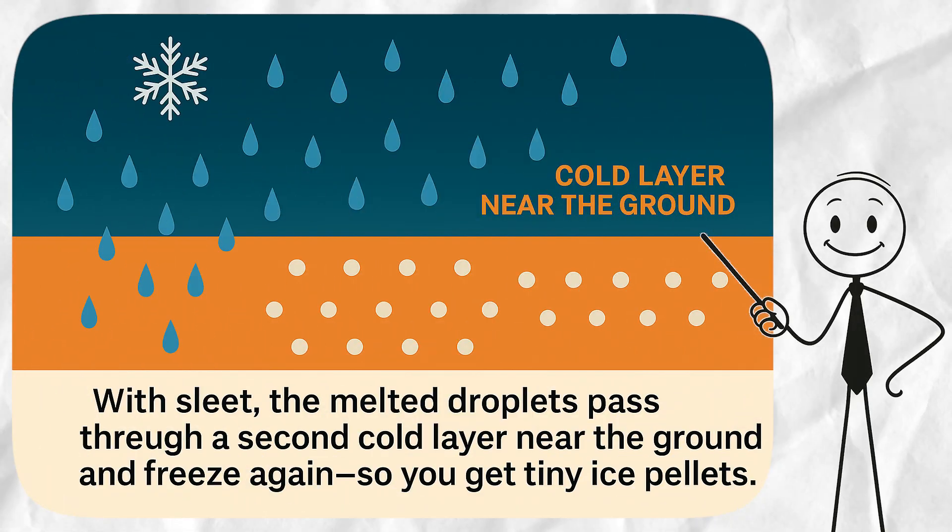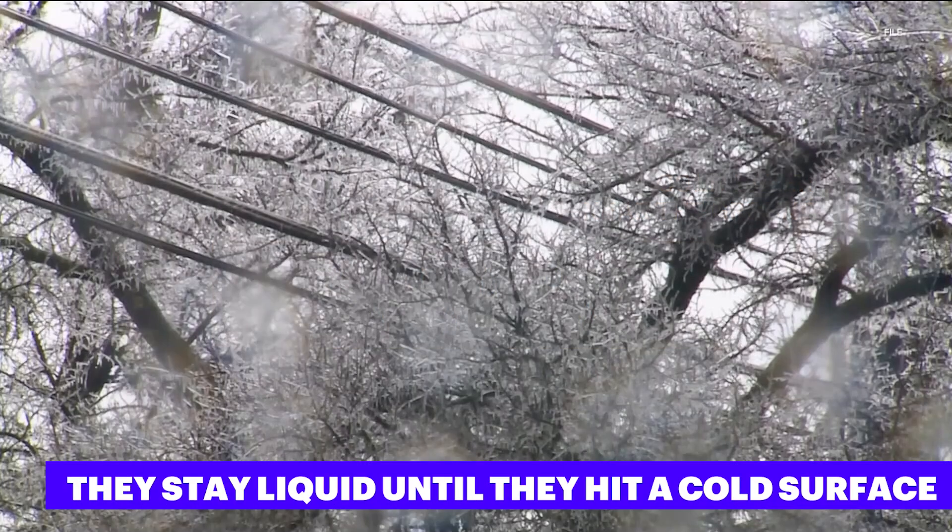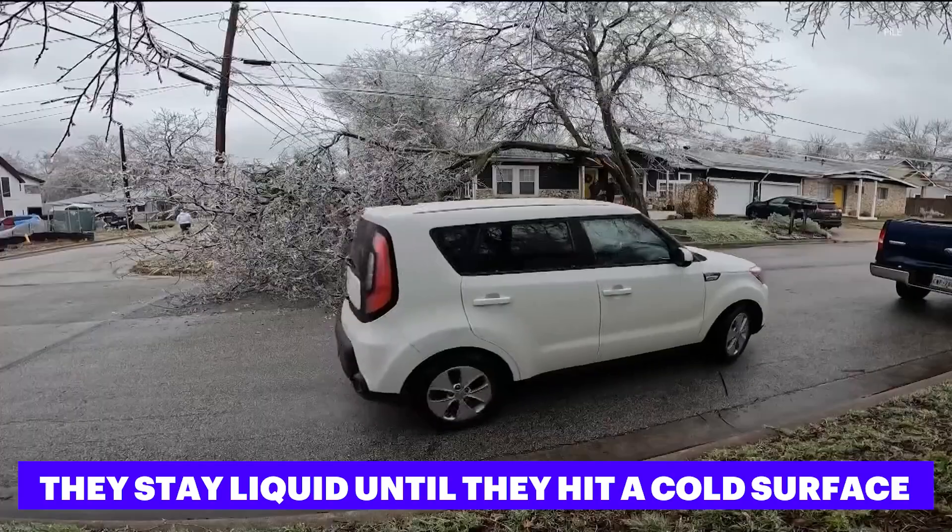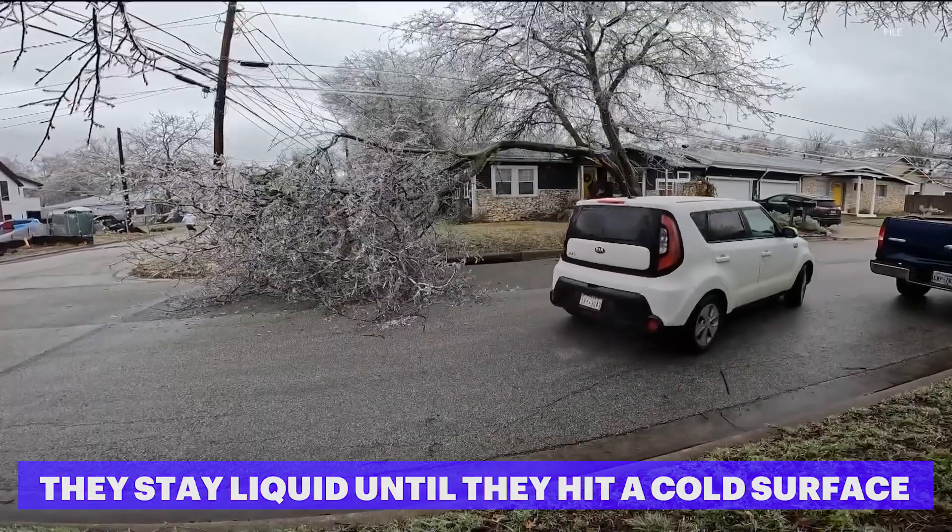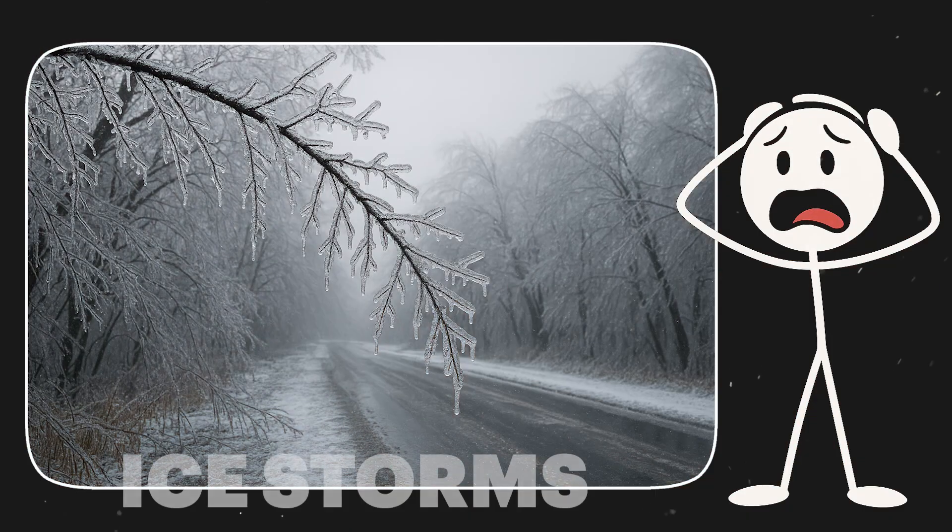With sleet, the melted droplets pass through a second cold layer near the ground and freeze again. So you get tiny ice pellets. With freezing rain, the cold layer near the ground isn't thick enough to refreeze the drops. They stay liquid until they hit a cold surface, like a sidewalk, a tree branch, or a car windshield. And then they instantly freeze on contact. That's what causes those terrifying ice storms and makes roads super dangerous.